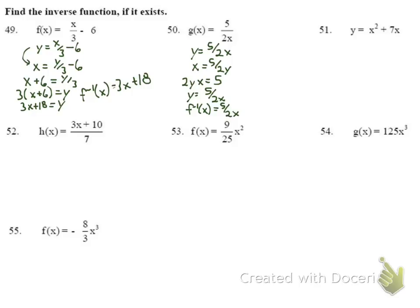For number 51: this is a parabola. We consider the horizontal line test — if a horizontal line crosses the parabola in more than one spot, there is no inverse. Drawing a horizontal line hits the parabola in more than one location, so we say no inverse.